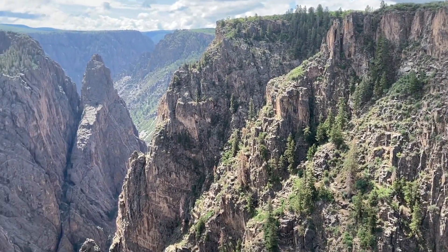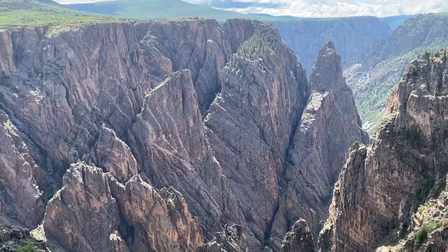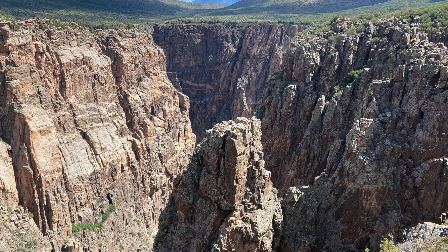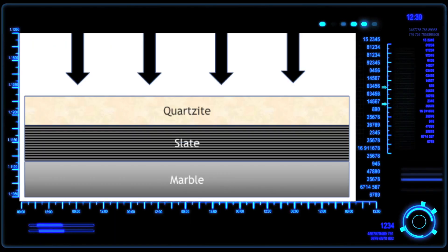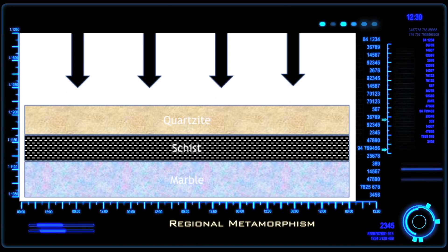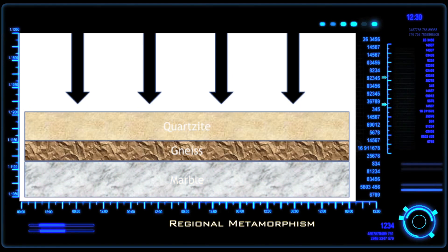Sometimes large areas of rock are buried due to large-scale forces within the earth. These forces are so big and occur over such long periods of time, it's almost hard to imagine. These forces bury the rocks deep and cause giant masses of rock to change. As these rocks are buried, pressure and heat increase. We call this regional metamorphism.